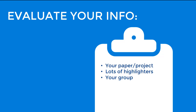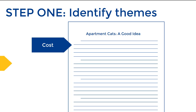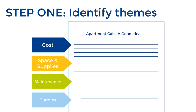First things first, you need to determine the main themes or ideas in your paper. If your main claim is cats are the most convenient pets for people who live in apartments, some of the themes might be cost, space and supplies, maintenance, and of course, cuddles.